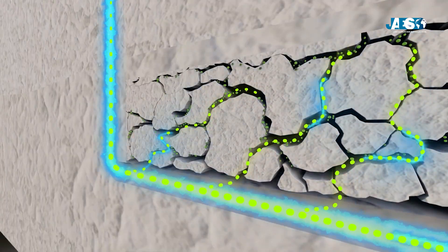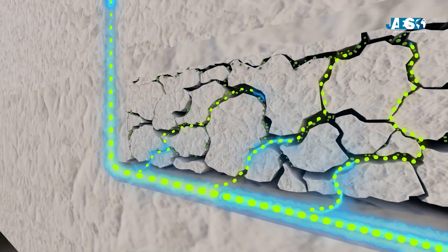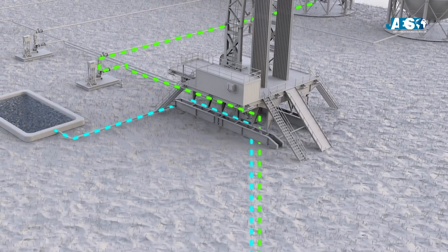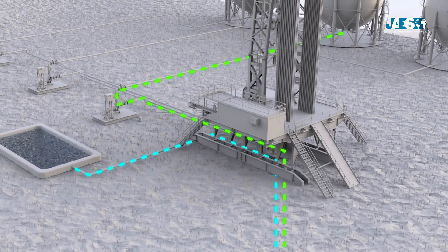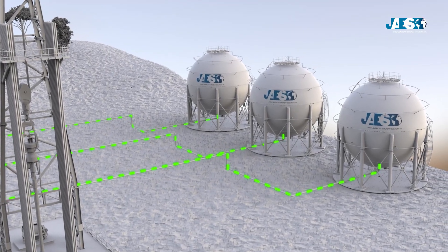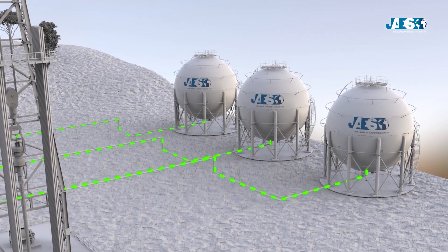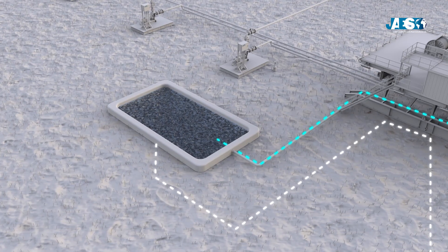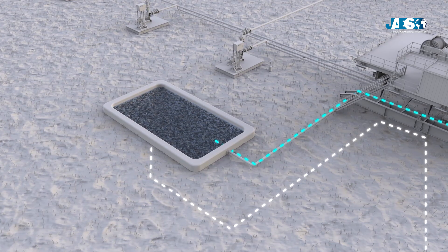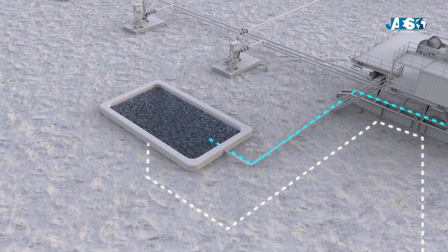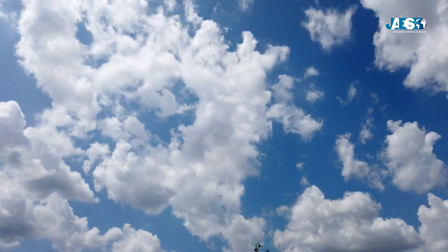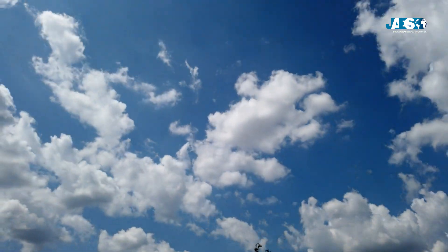Pumps extract the liquid from the well, drawing out the methane gas released from the rock. At the surface, the gas gets separated from the liquid and stored in tanks kept under pressure. The liquid with excavated waste is discharged into a tank, which filters it with the aim of reusing it.